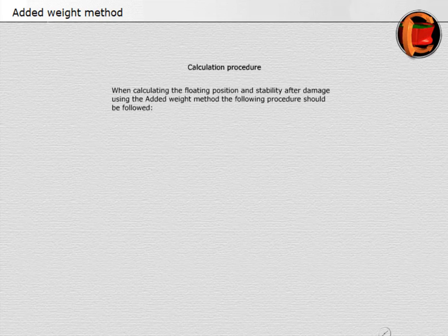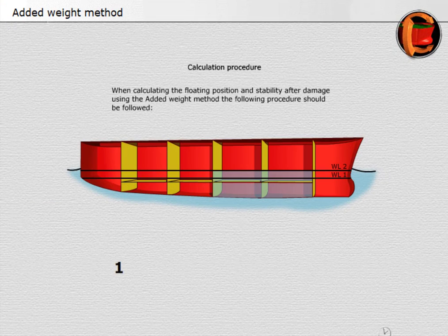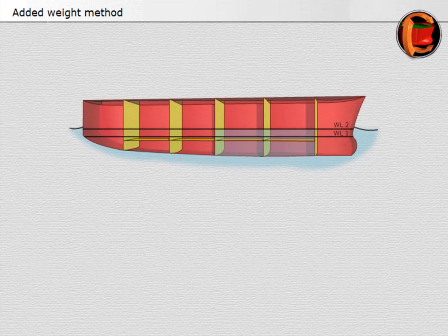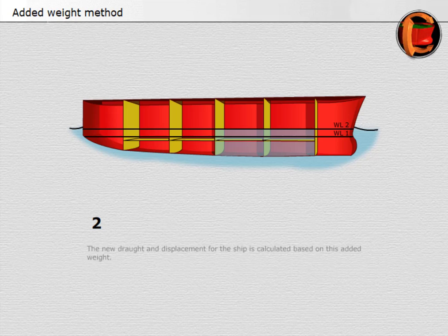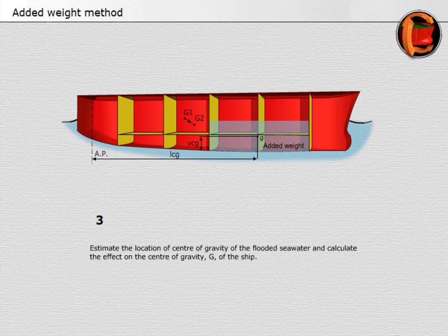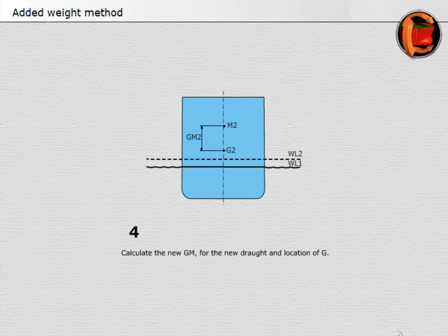Calculation procedure for the added weight method: Step 1 — estimate the mass of the flooded seawater and use this as an added weight. Step 2 — calculate the new draft and displacement for the ship based on this added weight. Step 3 — estimate the location of the centre of gravity of the flooded seawater and calculate the effect on the centre of gravity G of the ship. Step 4 — calculate the new GM for the new draft and location of G.